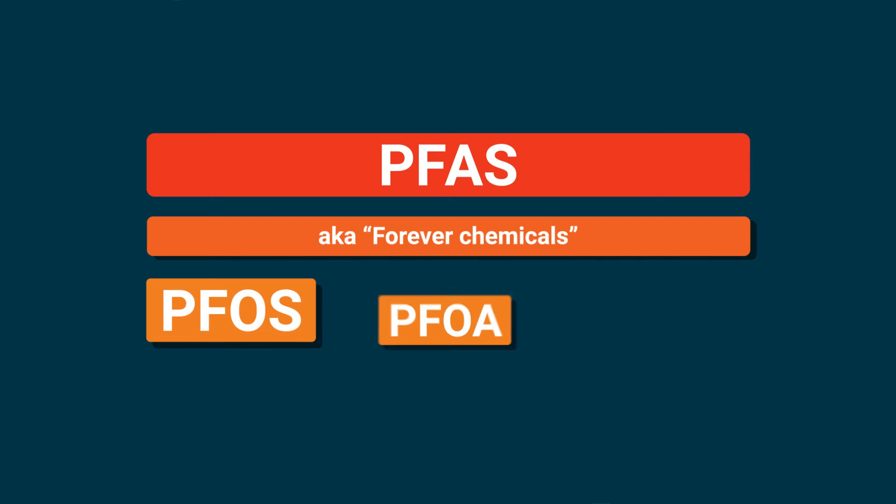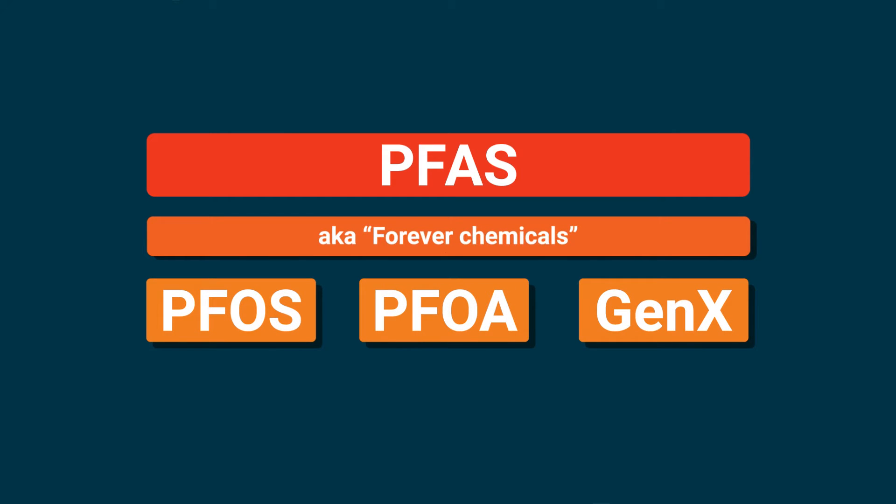PFAS, PFOA, and GEN-X are the most commonly named substances within the group, but there are over 5,000 different PFAS chemicals. In this video, we'll show you how to pronounce the names of 30 of them.